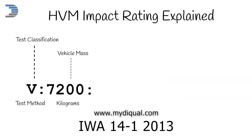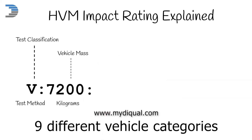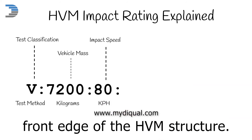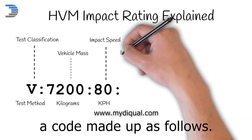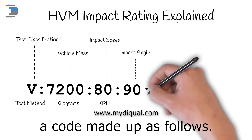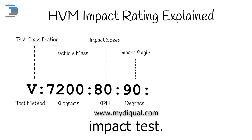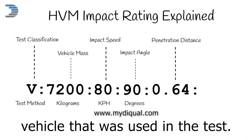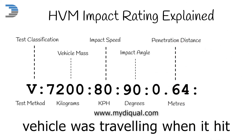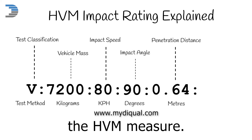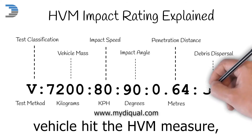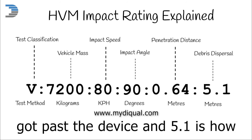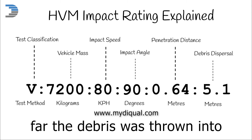IWA 14-1, 2013 covers nine different vehicle categories, with impact speed from 16 to 112 kph, and penetration is measured from the front edge of the HVM structure. The performance rating is given as a code made up as follows: V is for vehicle impact test. 7200 is the mass or weight of the vehicle used in the test. 80 kph is the speed the vehicle was traveling when it hit the HVM measure. 90 degrees is the angle that the vehicle hit the HVM measure, i.e., straight on. 0.64 meters is how far the vehicle got past the device, and 5.1 meters is how far the debris was thrown into the secure area.